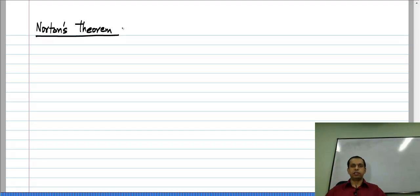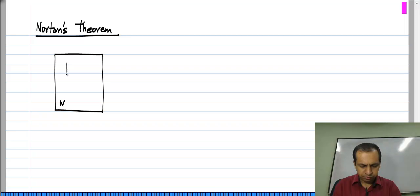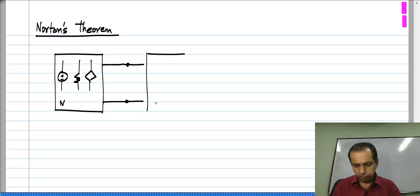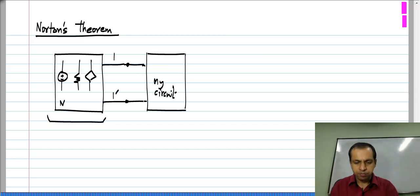The derivation of this equivalent is similar to the derivation of the Thevenin's equivalent. Let us say we have a network N consisting of independent sources — I will show them by a single source like this — resistors and linear control sources, and it is connected to some other circuit. What we want is a representation of this circuit N at the terminals 1 and 1 prime, so it can stand in for the circuit regardless of what you connect to it.